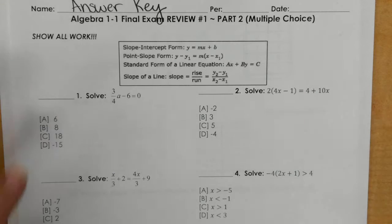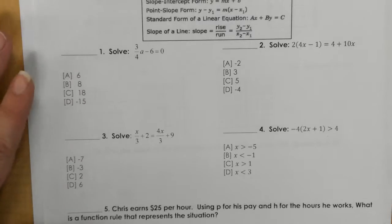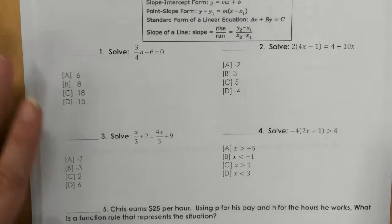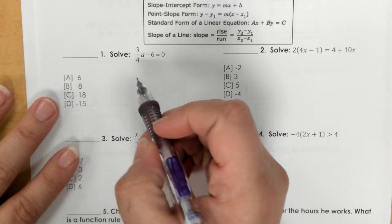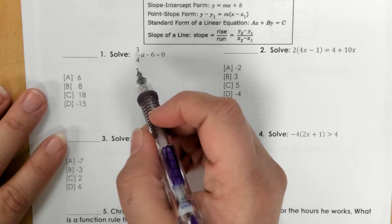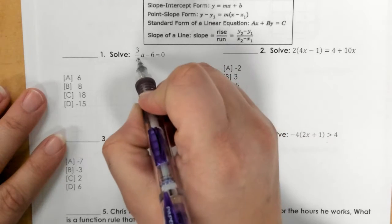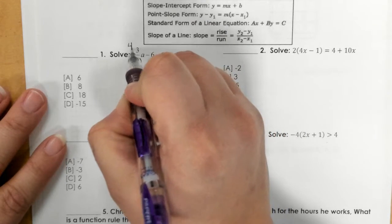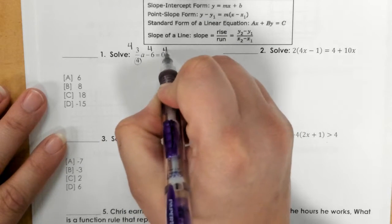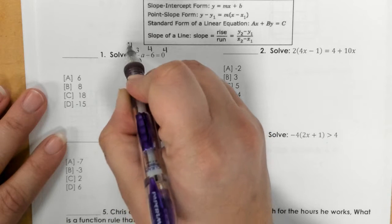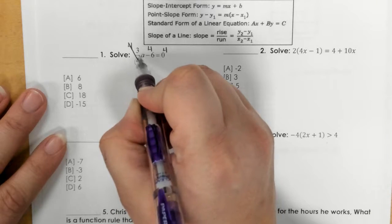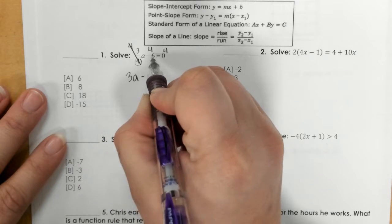For part two of the final exam review, number one. This part is multiple choice. Number one, we have a fraction three-fourths and I need to find the common denominator which would just be four, and then I multiply every term by four.